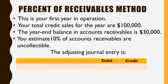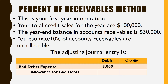In the first year, I'm going to use those same accounts — bad debt expense — 10% of $30,000. My accounts receivable gives me $3,000. And that allowance account is always the credit, and that's for $3,000. Don't get mixed up on the accounts — those are always the same. It's the computation of the amount that differs.